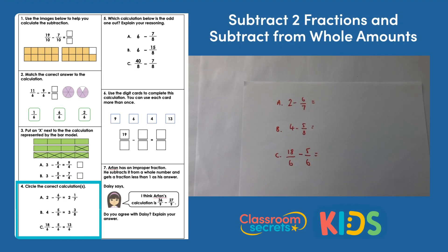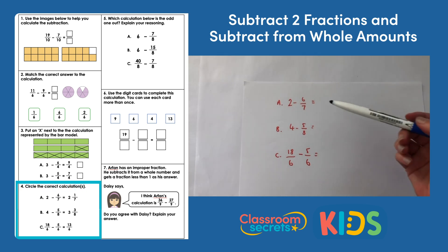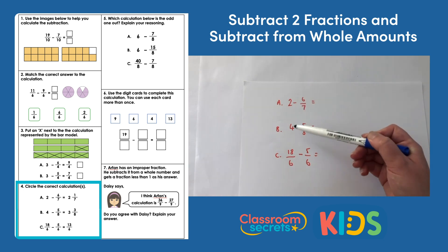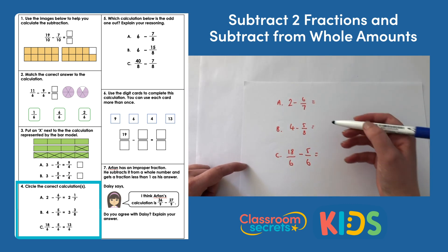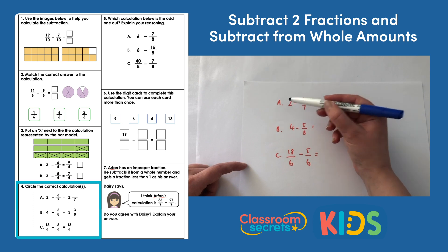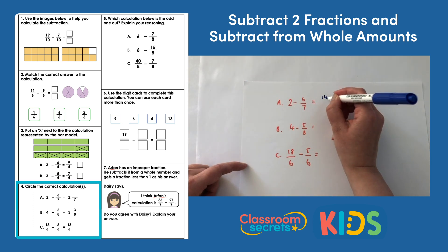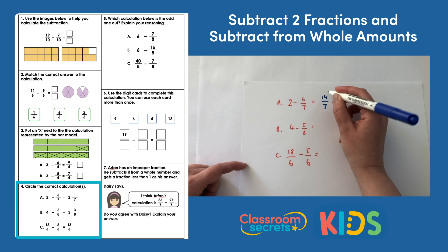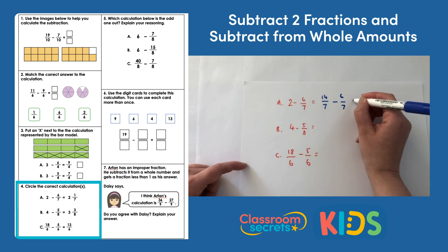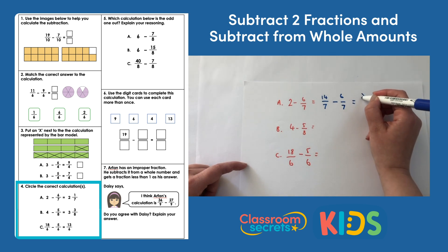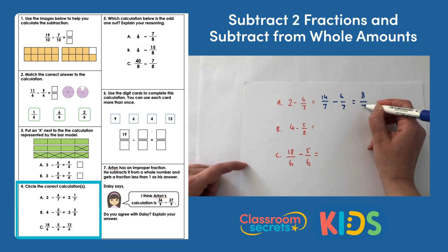Question four: circle the correct calculation or calculations — there might be more than one. For calculation A: 2 subtract 6 sevenths. We need the equivalent fraction for 2 wholes: 2 times 7 is 14, so 14 sevenths subtract 6 sevenths equals 8 sevenths. For calculation B: 4 subtract 5 eighths. 4 times 8 is 32, so 32 eighths subtract 5 eighths equals 27 eighths. We'll convert these back to mixed numbers shortly.